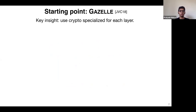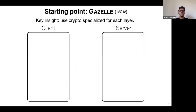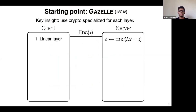The starting point for Delphi is the state-of-the-art Gazelle. The key insight in Gazelle is to use cryptography specialized for each kind of layer. To evaluate each linear layer, Gazelle uses linearly homomorphic encryption (LHE): the client encrypts its input, sends it to the server, the server homomorphically applies the linear layer and adds a mask S, sends back the ciphertext, and the client decrypts to obtain Lx plus S.